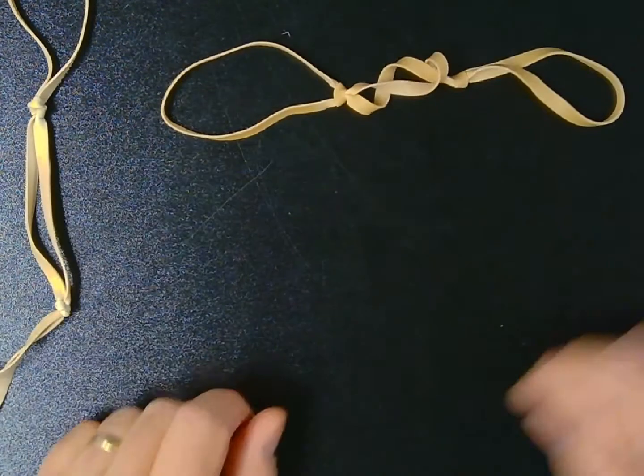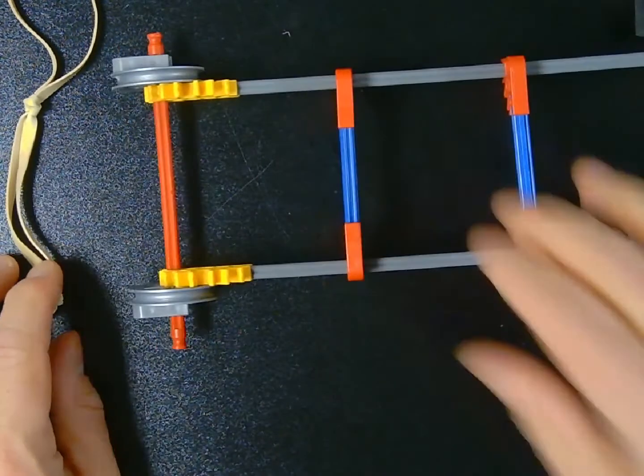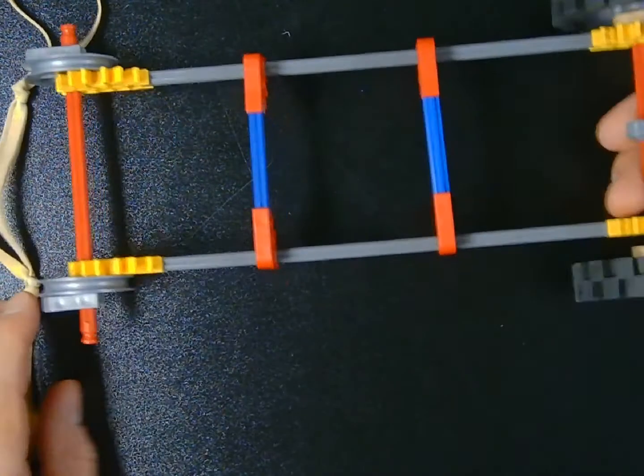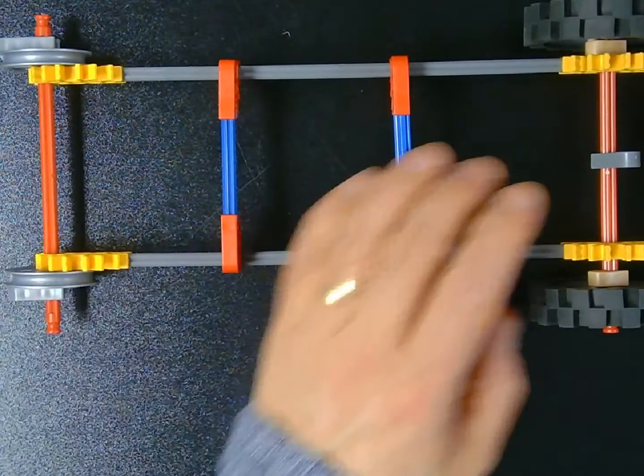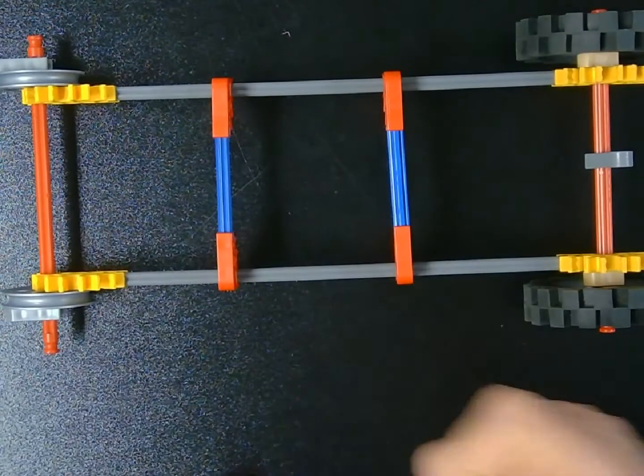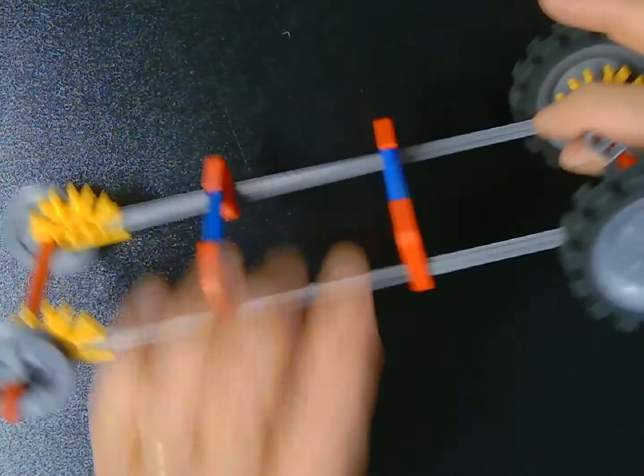Now, once I have my rubber band engine put together, here's what we're going to be doing. And now, when I asked you to build this standardized vehicle, I asked you to make a modification. And that was this gray piece right here on the back axle.